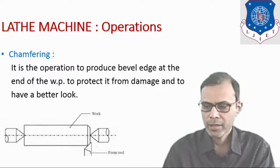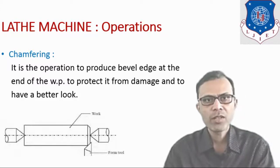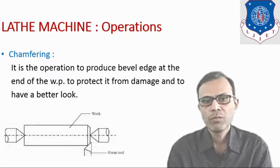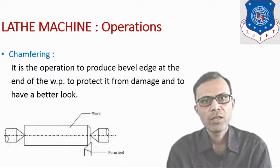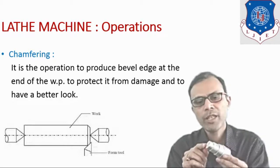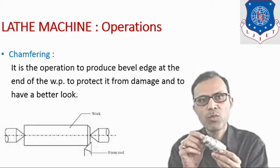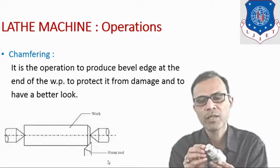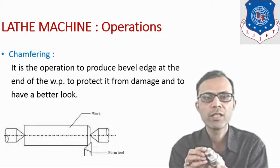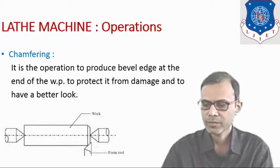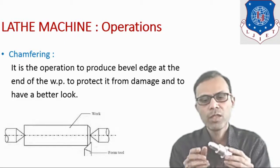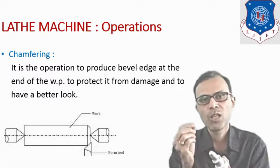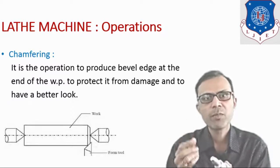The next operation is the chamfering operation. It is the operation to produce a bevel at the end of the workpiece to protect it from damage and to give it a better look. Here on the end of this workpiece, a smaller portion is beveled, as shown in the figure. A similar kind of smaller part is also produced here. On this workpiece as well, a chamfer has been produced at the end. That is known as the chamfering operation.